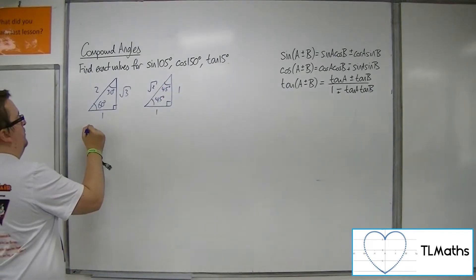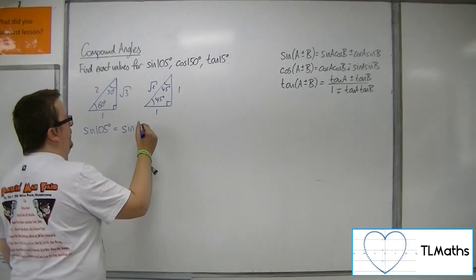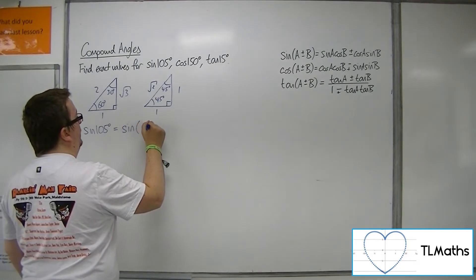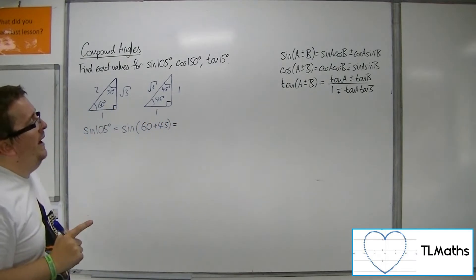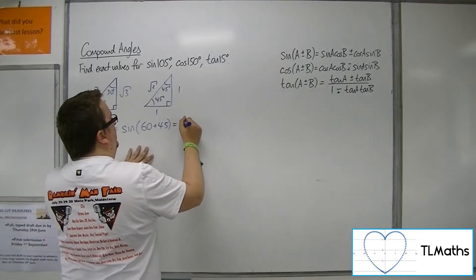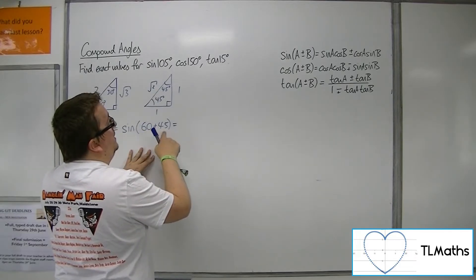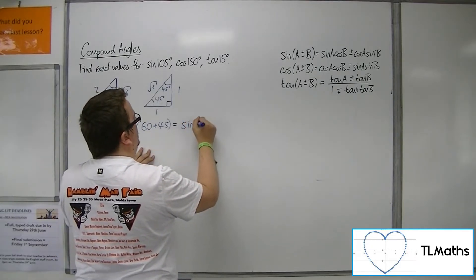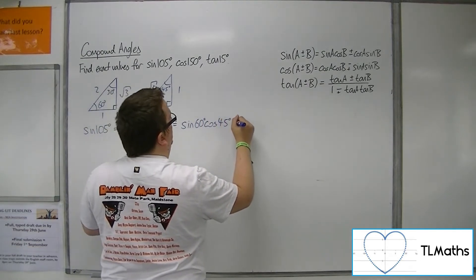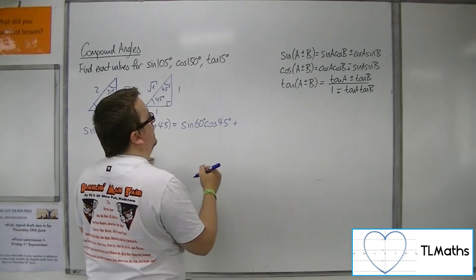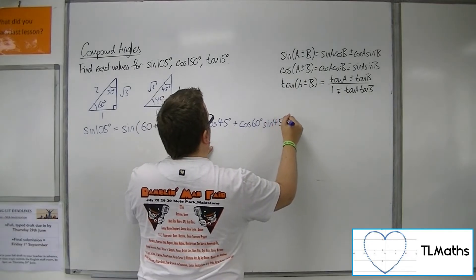Now sine of 105 degrees is the same as sine of 60 plus 45. So I can utilize the compound angle formula to say that sine of 60 plus 45, where a is 60 and b is 45, is sine of 60 degrees, cos of 45 degrees, plus cos of 60 degrees, sine of 45 degrees.